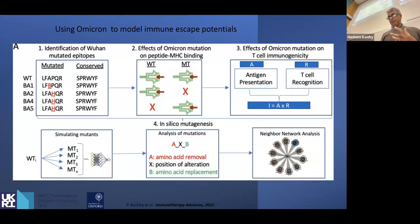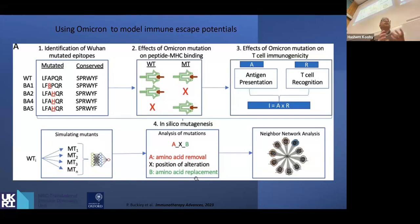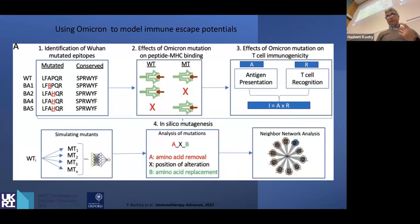We then simulated data to create all observed mutations in Omicron, Delta, and other variants, as well as possible future mutations, and incorporated physicochemical properties of these peptides into the model. We developed a neighbor network strategy to ask how likely it is that a mutation at a given position provides a likely escape route for the virus.